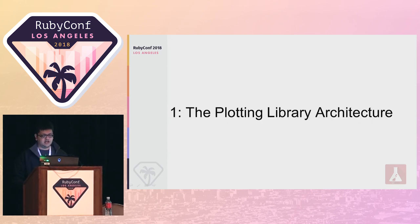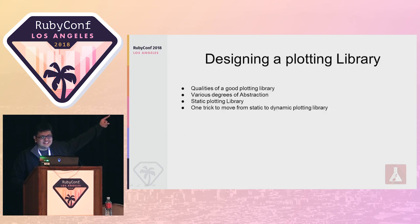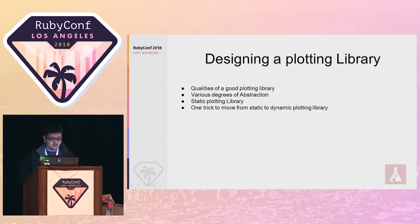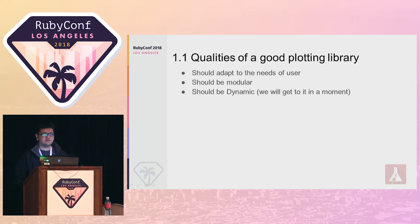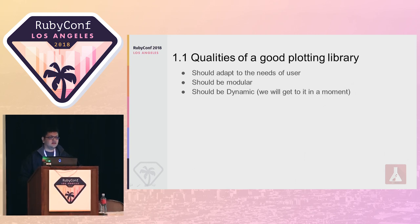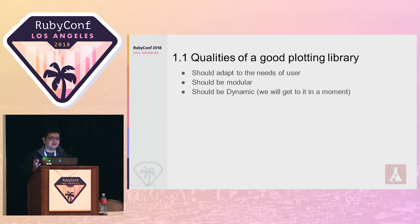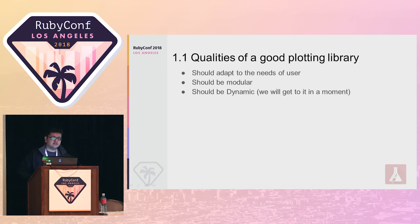Let's begin with the plotting library architecture. What are the qualities of a good plotting library? Firstly, it should adapt to the needs of its user. You can be a high-level user who just wants a good bar plot — just give an array of values and get a bar plot created, without defining each and every pixel. But you can also be a genius who wants to define a new plot altogether. These are the different layers of control that we want on the library, which brings us to our second point: it should be modular. By modular here, I don't mean different degrees of control, but rather there should be different backends, and the layers should be easily swappable.